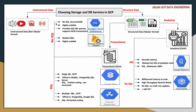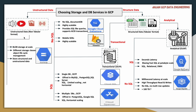Now coming to unstructured data: if you have to store blob-type data — object storage service at global scale — and if you are expecting that data can be stored in different storage classes to save cost, and if you have to store unstructured data as well as structured data, in such use cases you can consider Google Cloud Storage (GCS).